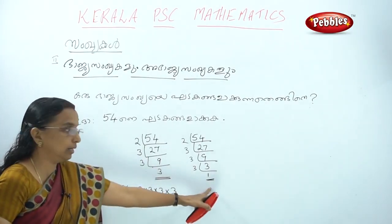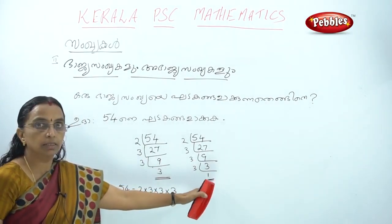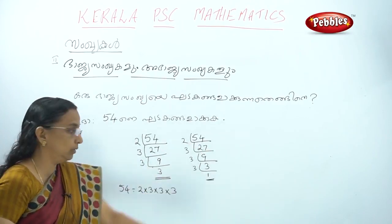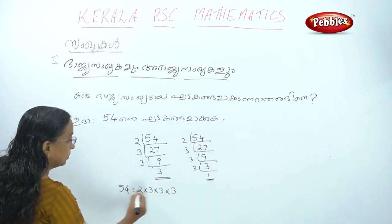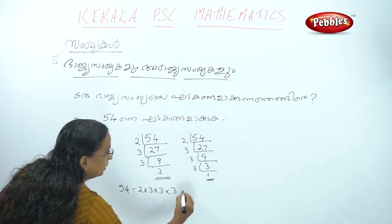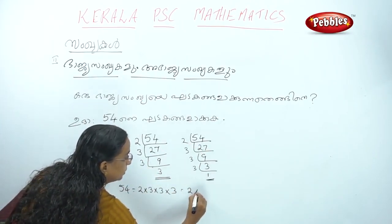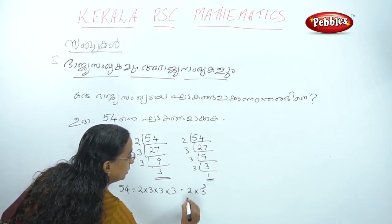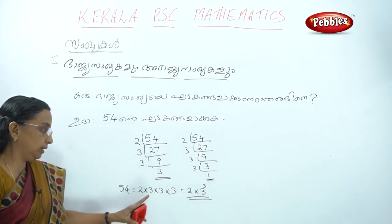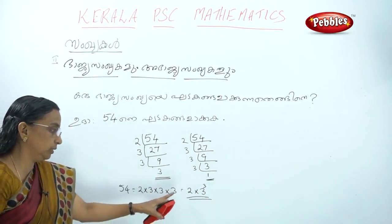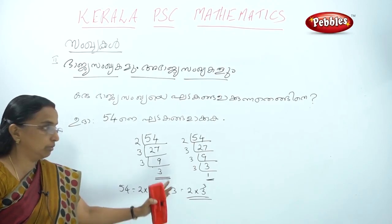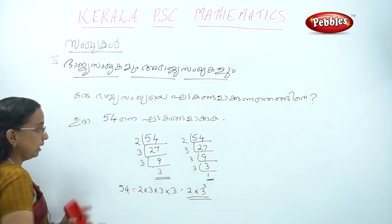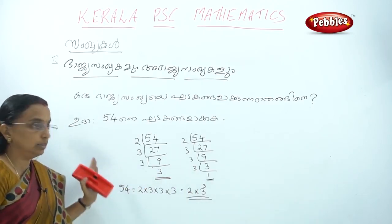If we have 1 method, we will do the 3 method. If we have 3 method, we will do the 3 method. If we have 3 method, we will do the 3 method. This method is a method.